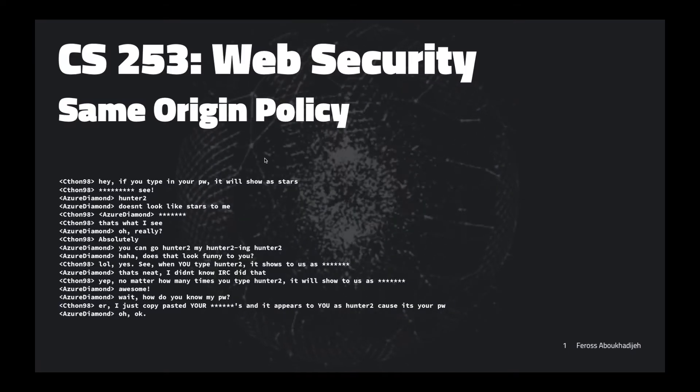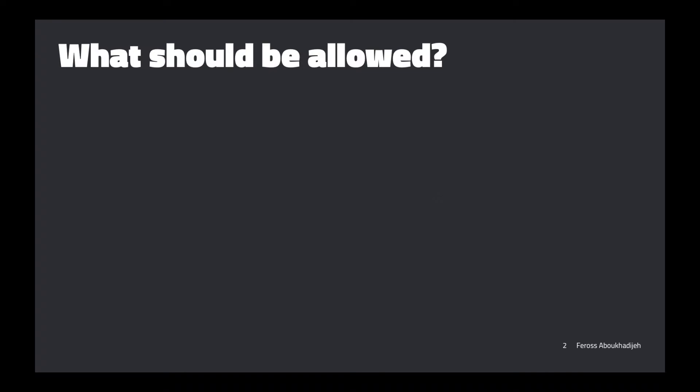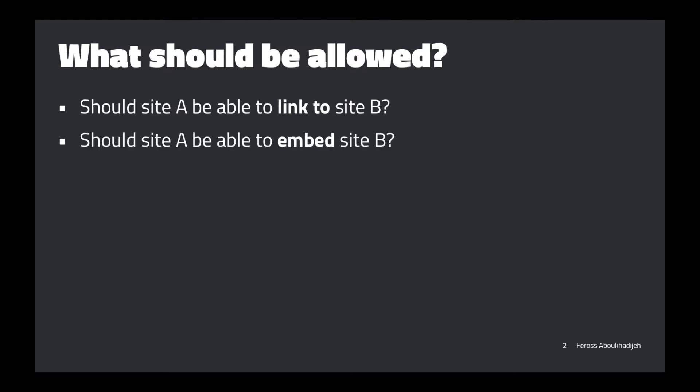For the same origin policy, we want to think about what to allow and what to deny. Should site A be able to link to site B? Yes — this is how the whole web works. Should site A be able to embed site B? Maybe — it's useful sometimes, but you could embed an invisible iframe over a Facebook page and intercept typing, which is a weird and potentially dangerous interaction between sites.